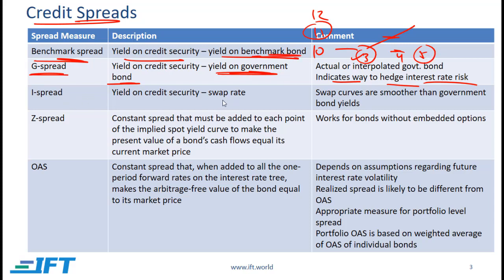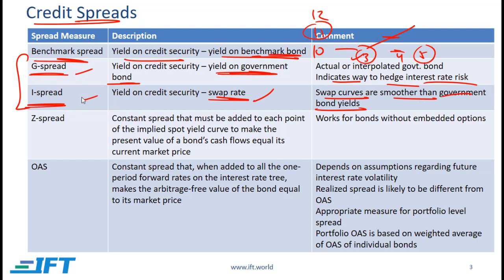If we use the swap rate instead of the yield on a benchmark bond, the spread measure is called the I spread. The government bond yield curve might not always be smooth because of supply and demand issues in the government bond market, but swap curves tend to be much smoother. From a testability perspective, when choosing between the G spread and I spread, one major concern is which benchmark has lower credit risk — ideally the benchmark should have as low credit risk as possible.